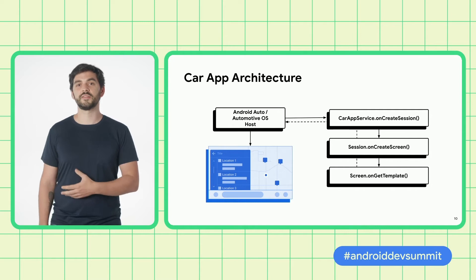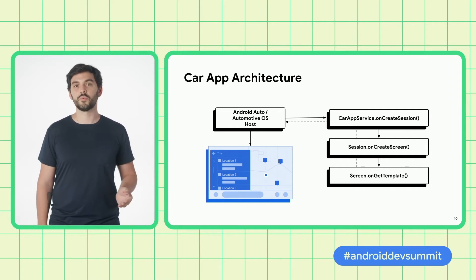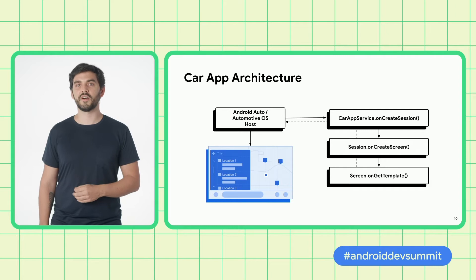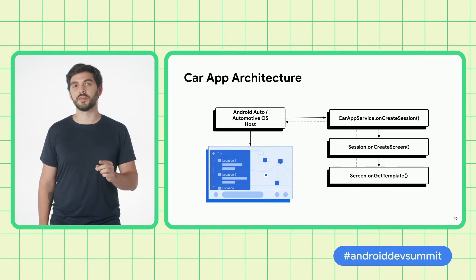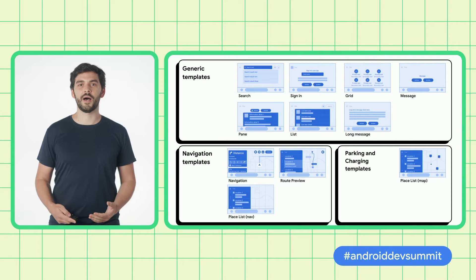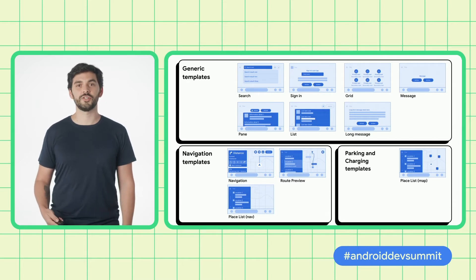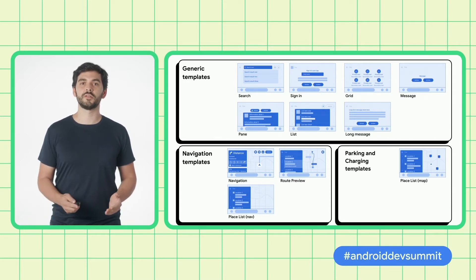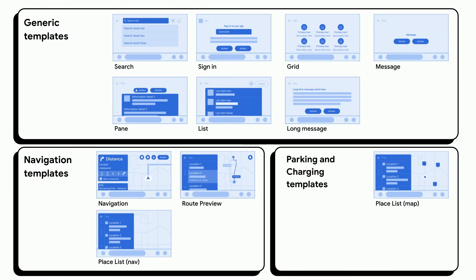With Android Auto, you will find the same look and feel across all vehicles. And with Android Automotive OS, you will find the rendered UI influenced by OEM customizations, so your app will feel like it belongs in that specific car without any extra effort on your part. When using the Car App Library, you need to declare a category for your app out of either navigation, charging, or parking, which will give you access to the corresponding templates for that category. All apps have access to the top seven templates, while navigation and parking and charging apps have specific templates for their use case.